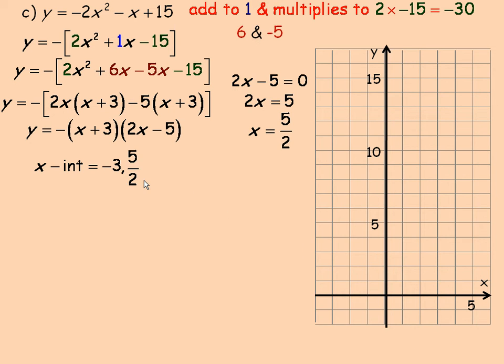So 5 halves is the other intercept, or 2.5. And so we plot those two points at negative 3 and 5 halves, or 2.5. So those are the intercepts.